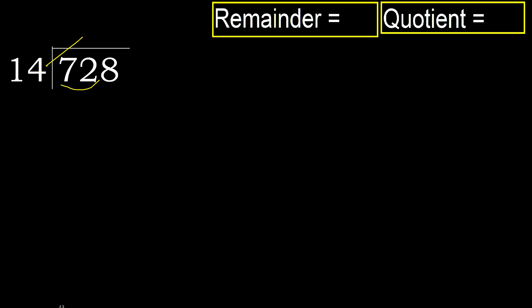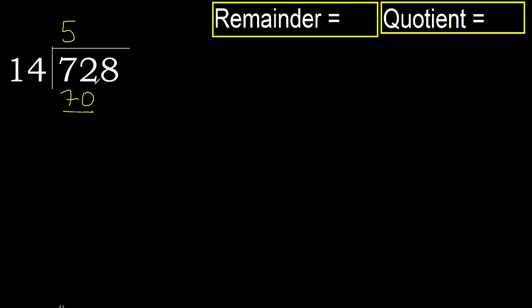But not greater — 14 multiplied by 6 is greater. Multiplied by 5: 70 is not greater. Ok. 72 minus 70 is 2.